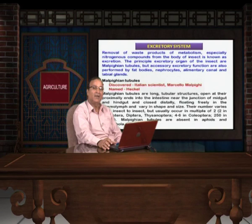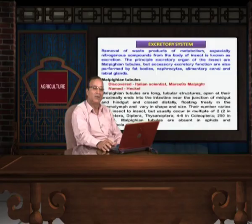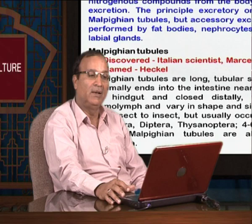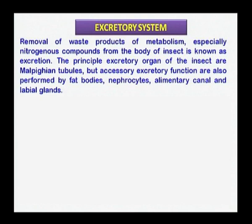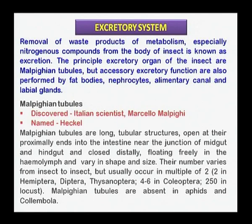Another important system playing an important role in the insect body is the excretory system. The excretory products, which include urea, uric acid, and many salts, have to be drawn out from the body, and that function is done by the excretory system. In insects, the principal excretory organs are the Malpighian tubules.